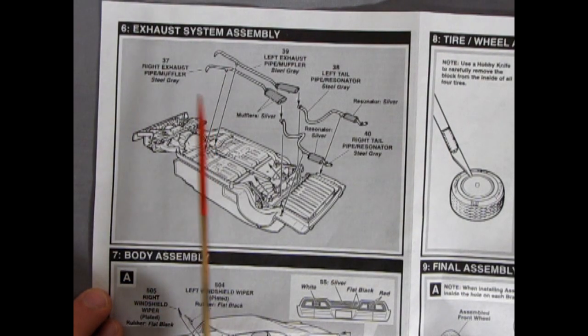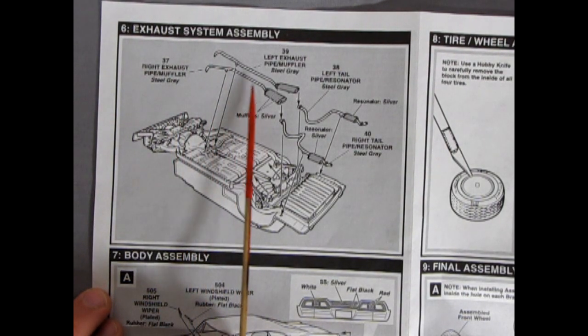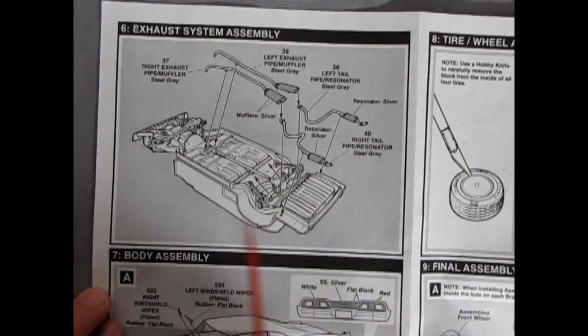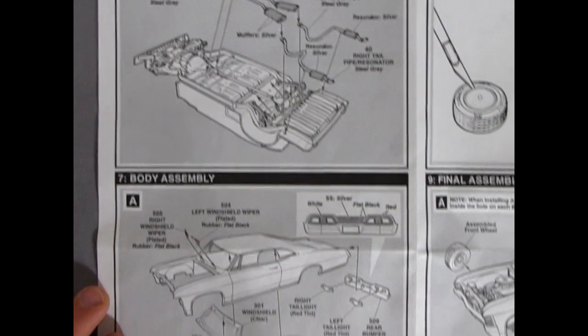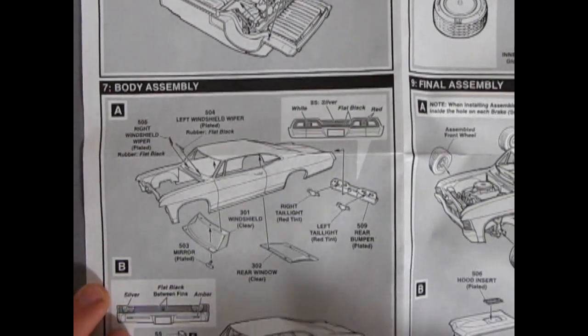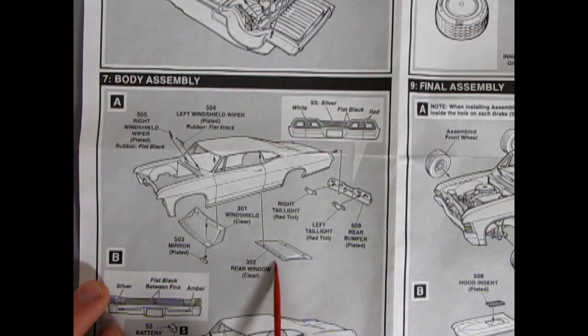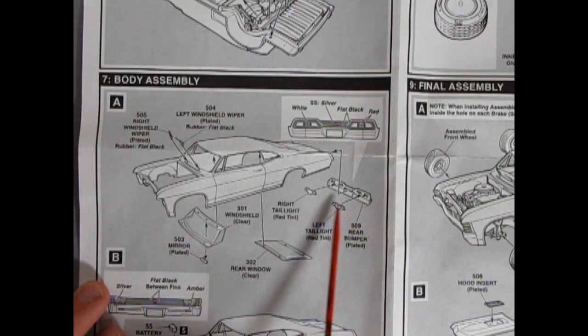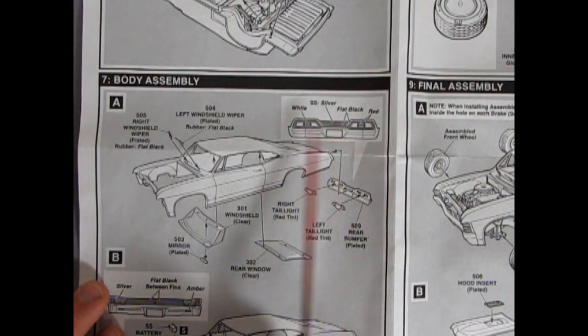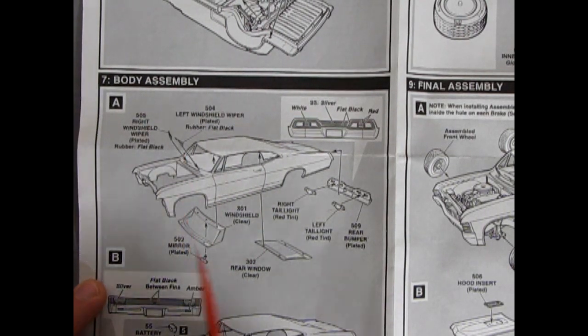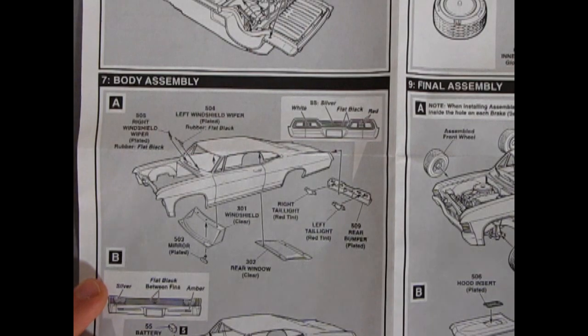Our next panel shows the exhaust system assembly. Left and right exhaust pipes. There are two pieces. And then we get our body assembly going on here with the glass in your mirror, the rear tail lights popping through this nice chrome bumper in the back, as well as windshield wipers, which is always nice.